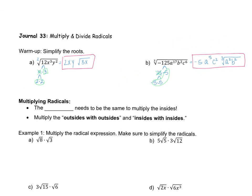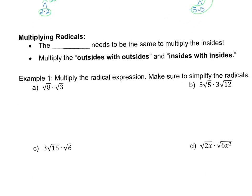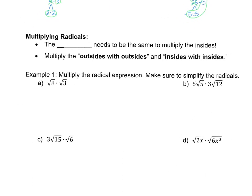We're brushing up on roots because we're getting into multiplying radicals. 'Radicals' is a more generic term for roots — you can say square root or cube root, but if referring to any type of root, we call it a radical. The key rule: the root type must be the same in order to multiply the insides.